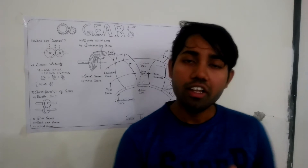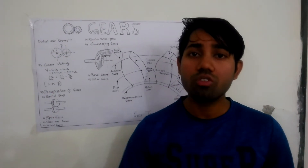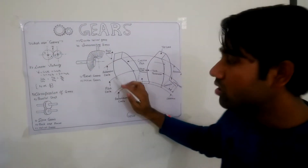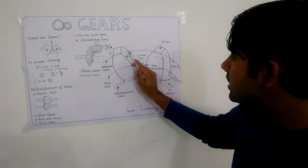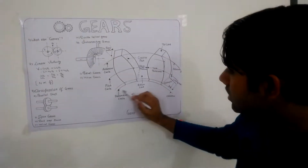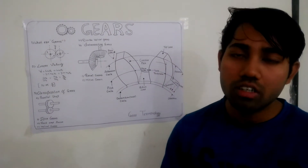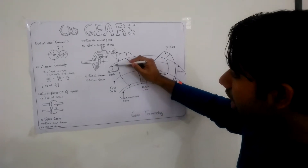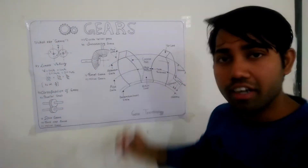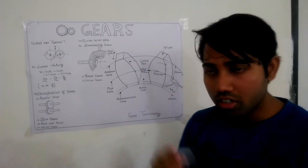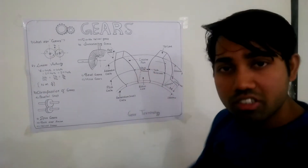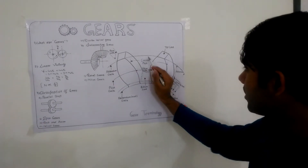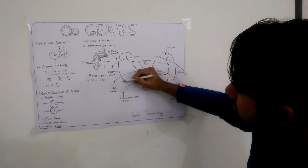Now comes gear terminology. The circle passing through the tips of the teeth is known as the addendum circle. The circle passing through the bottom of the teeth is known as the dedendum circle. Addendum is the radial height above the pitch circle of a tooth — its value is one module. Dedendum is the radial depth of a tooth beneath the pitch circle.